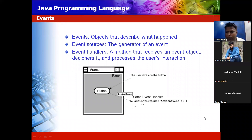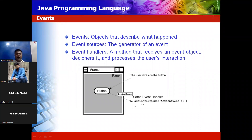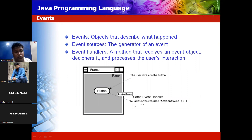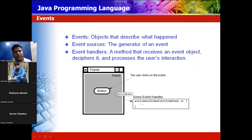Now comes a very important chapter of Java called events. An event means any action that you perform on the screen. For example, when you click on a button after entering your ID and password for login, it moves to the next page. That click is called an event.